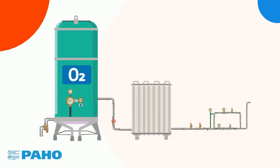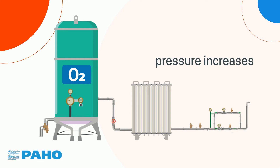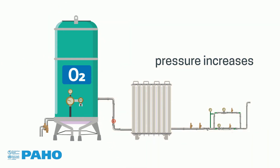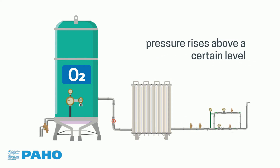When liquid oxygen is being gasified, its pressure increases. To prevent accidents, the gasifier is on a circuit with a safety valve that is activated whenever the pressure rises above a certain level.